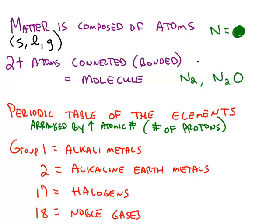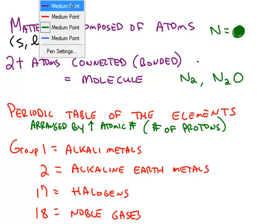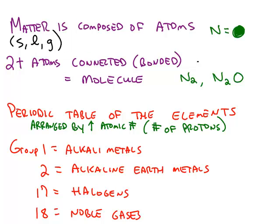Chemistry is a study of matter and the changes in matter. And all matter is composed of atoms, whether it's a solid, a liquid, or a gas. And in this book, atoms are represented by different color spheres. So, for example, a nitrogen atom might be given a certain color.